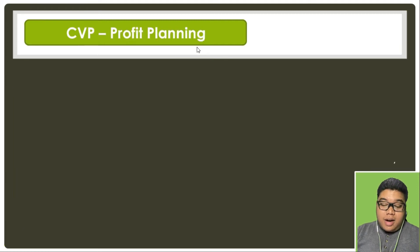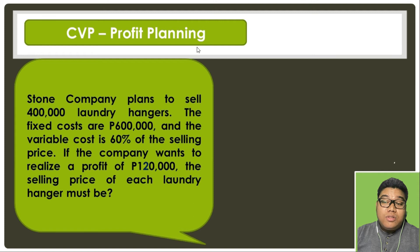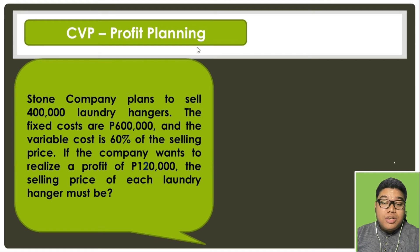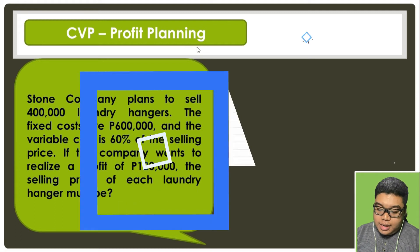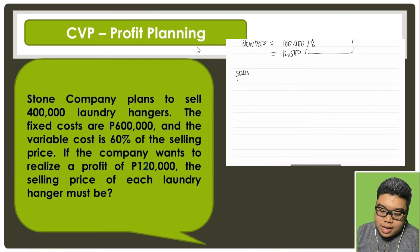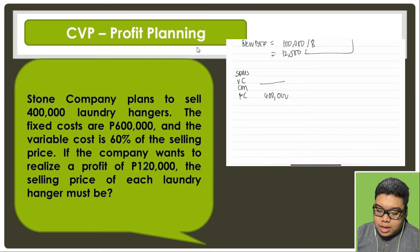Now let's try to use CVP analysis in profit planning. Stone Company plans to sell 400,000 laundry hangers. The fixed costs are 600,000 and the variable cost is 60% of the selling price. If the company wants to realize a profit of 120,000, the selling price of each laundry hanger must be how much? We need to compute for the selling price. We have sales, variable cost, and contribution margin, then fixed cost of 600,000.